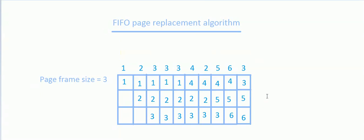There are a few disadvantages of this algorithm. One disadvantage is that a page which is accessed quite often may also get replaced because it arrived earlier than those currently present. As you can see, page number 3 was quite often used, but when page 6 arrived, page 3 got replaced. Another disadvantage is that a page which was referred last may also get replaced, although there is a high probability the same page may be needed again. As you can see, the page referred last was 2, but when 5 arrived, it got replaced — so this is a disadvantage of the FIFO page replacement algorithm.